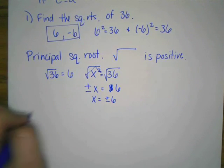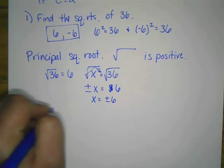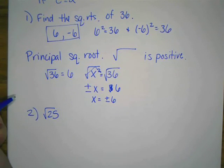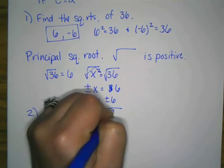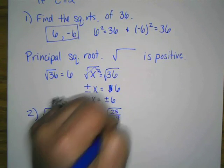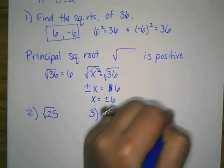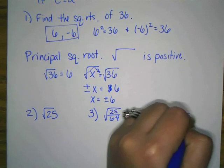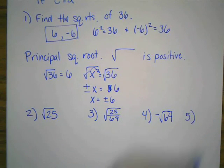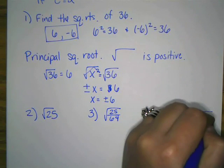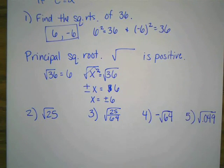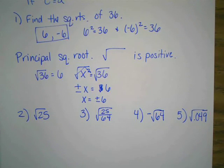So here are a few to try. Square root of 25. Square root of 25 over 64. Negative square root of 64. And square root of 0.049. So if you take a moment, write these down and work these out, and push pause and come back to me.